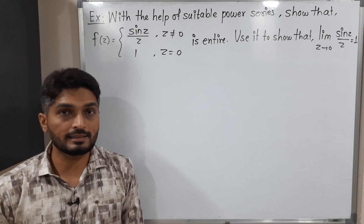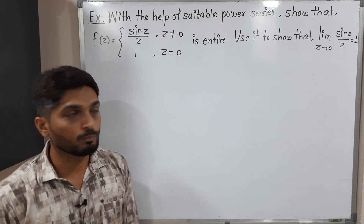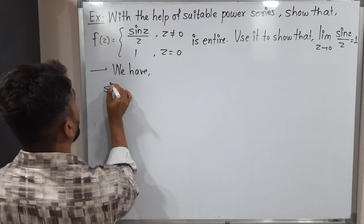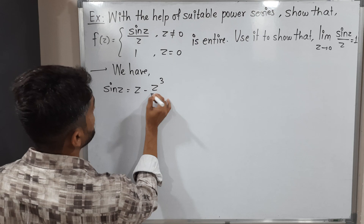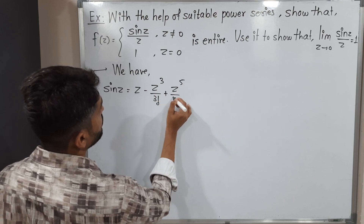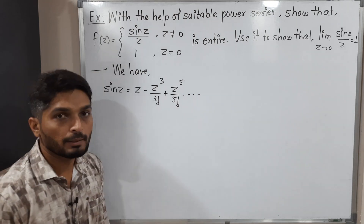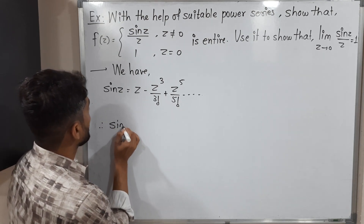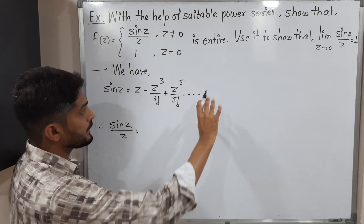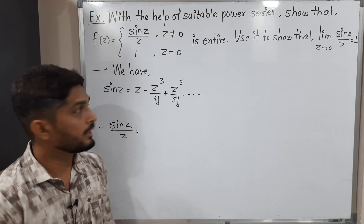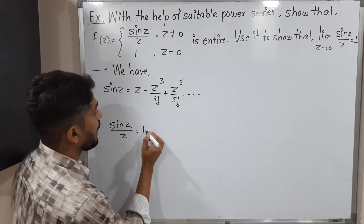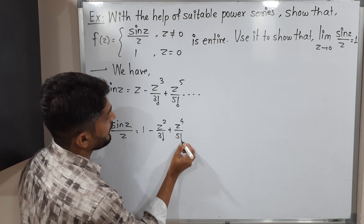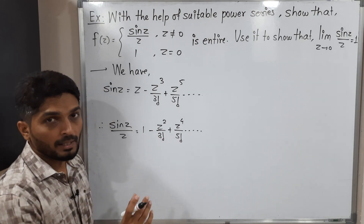The well-known function sin(z) and its power series is familiar to us. The power series of sin(z) is z minus z³/3! plus z⁵/5! and so on, with alternating minus and plus signs. Since we need to divide by z, let us divide both sides by z. Therefore sin(z)/z equals — dividing each term on the right-hand side by z separately — the power of z reduces by 1, giving us 1 minus z²/3! plus z⁴/5! and so on.